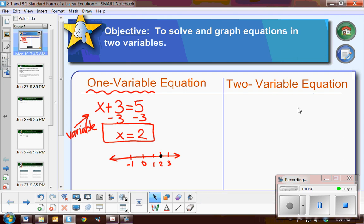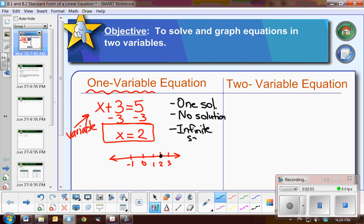Now for these problems, on your last test, you remember you could either have one solution. For example, this example has the solution of 2. Remember sometimes there was no solution. And then also there were cases where we had infinite solutions, or all real numbers. Or as the book calls it, identity.